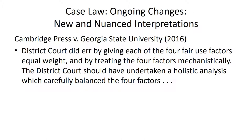Our interpretation of the four factors is based on case law, and there are always new and nuanced interpretations as new court cases arise. In Cambridge v. Georgia State University, the appellate court found that the district court erred by giving each of the four factors equal weight and treating them mechanistically. The district court should have undertaken a holistic analysis that carefully balanced all four factors, looking at them in context.